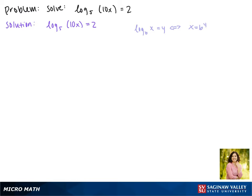So our equation can be rewritten as 10x equals 5 to the second power. Notice that this 5 came from the base of our log.